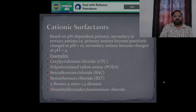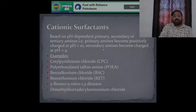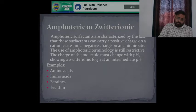Cationic surfactants include CPC, POEA, and PSE. These are based on primary, secondary, or tertiary amines. Primary amines become positively charged at pH less than 10, and secondary amines become charged at pH less than 4. These are a few examples of cationic surfactants.